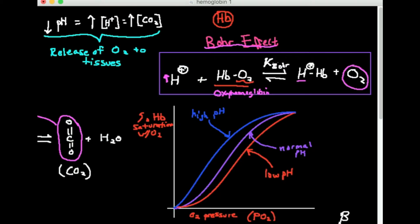The opposite is also true. If a low pH and high hydrogen ion concentration cause release of oxygen, then on the flip side, a high pH — which corresponds to a low concentration of hydrogen ions — tends to favor binding of oxygen by hemoglobin.